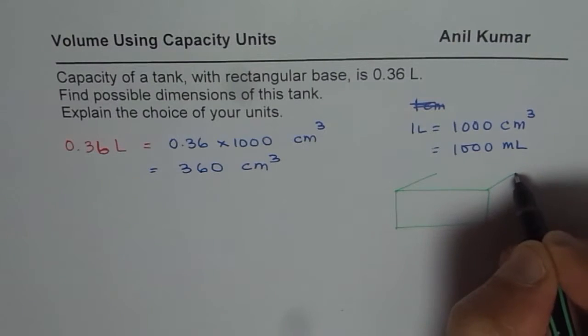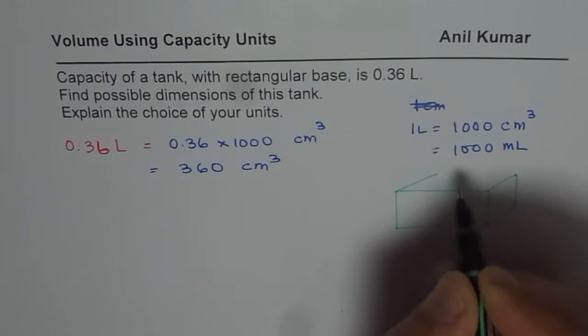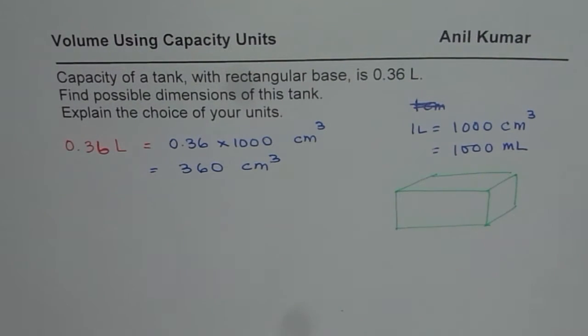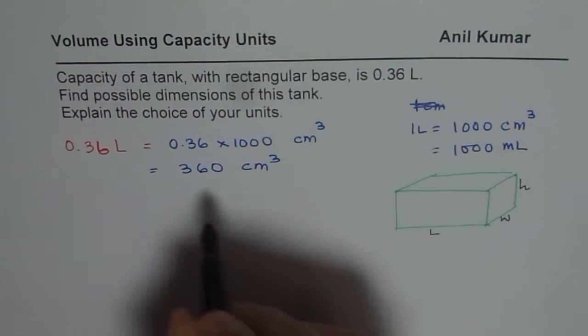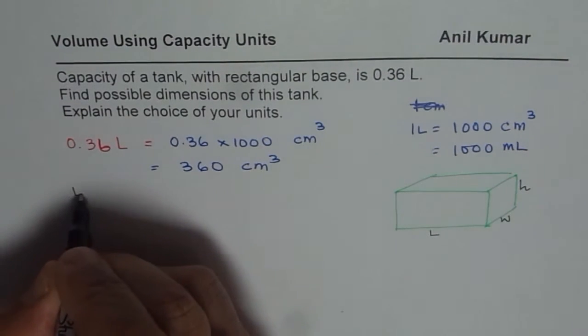Let us say this is our rectangular base, that is the base for our tank. Now if I multiply three sides, that means length, width and height, I should get 360.